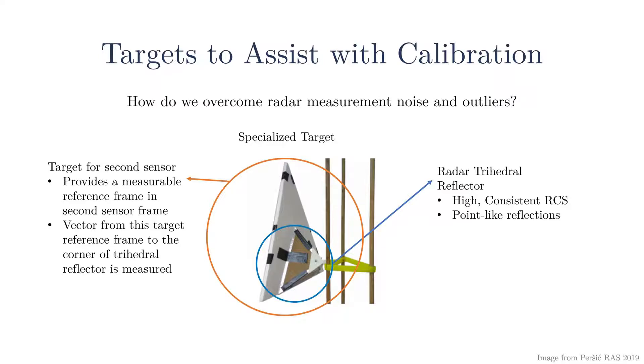This target provides a method for the second sensor to measure the corner of the radar trihedral reflector. For the camera case, this target is an April tag, and the vector from the April tag to the corner is hand-measured before starting the calibration process. While extremely useful, these targets do not occur in the real world and restrict the calibration process to the laboratory center.